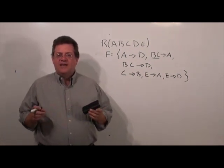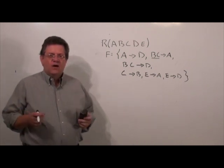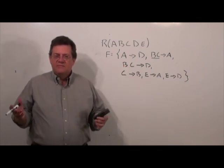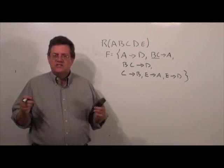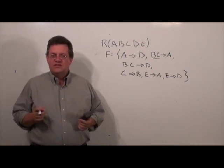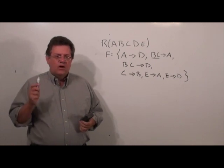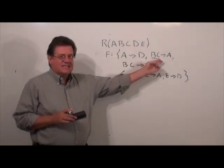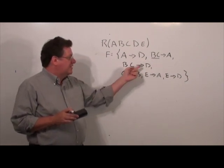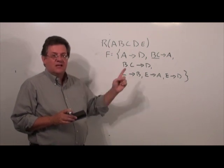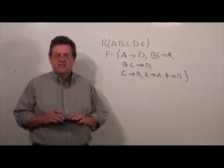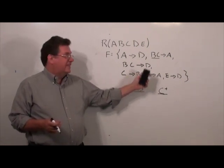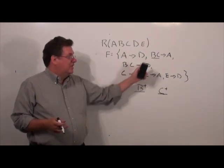Our next step is to see whether or not we have any extraneous attributes on the left-hand side. If a functional dependency has only one attribute on the left-hand side, you cannot eliminate it. So we look for those with two or more attributes. We do this one functional dependency at a time. We're going to focus on BC determines A, asking what is B closure and what is C closure — that is, taking proper subsets of BC to see if any of those closures include A.